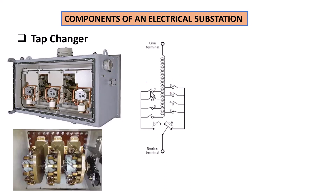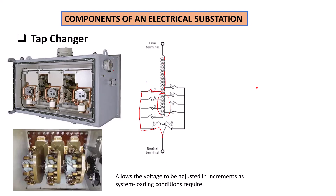By changing the position of the tapping, we will actually be changing the voltage ratio, and that will maintain regulation on the secondary. As you can see here, if we close this switch on tapping number seven, the current will flow down through the coil and through to the neutral connection. This means we're not going to make use of all sections of the coil, and by not using that section, it will alter and change the turns ratio between the primary and the secondary — and once that changes, it will result in changing the voltage ratio as well. In short, a tap changer basically allows the voltage to be adjusted in increments as system loading conditions require.